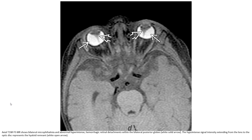This is another example of PHPV. The image shows bilateral microphthalmia and abnormal hyperintense hemorrhagic retinal detachment within the bilateral posterior globe. The hyperintense signal intensity is extending from the lens to the optic disc, representing the hyaloid remnant.